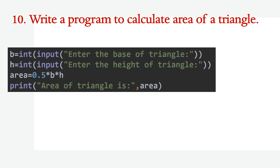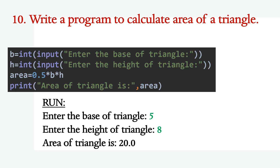Write a program to calculate the area of a triangle. The area is 0.5 into base into height. Take values of base and height in variables b and h. The user enters the base of the triangle and the height of the triangle. Area equals 0.5 * b * h. Print 'the area of the triangle is area'. For base 5 and height 8, the output is area of the triangle is 20.